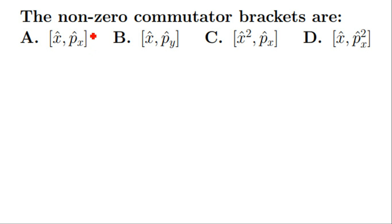In this problem we are given four commutator brackets. We have to check which of these commutator brackets are non-zero. Let us now solve this problem.